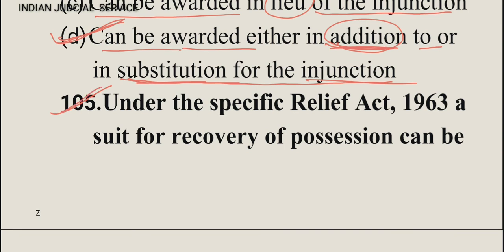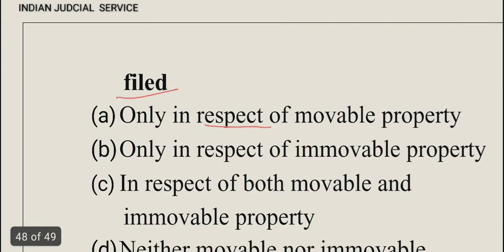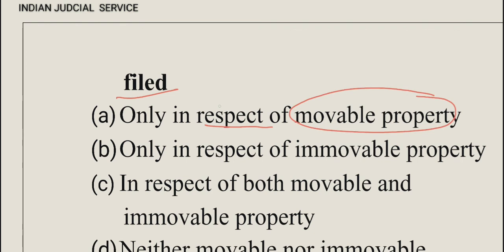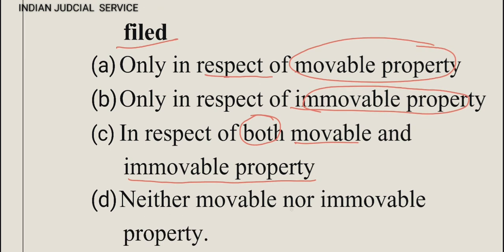Question number 105 — the final question of this video. Under the Specific Relief Act 1963, a suit for recovery of possession can be filed — option A: only in respect of movable property, option B: only in respect of immovable property, option C: in respect of both movable and immovable property, option D: neither movable nor immovable property. The answer is option C, in respect of both movable and immovable property.